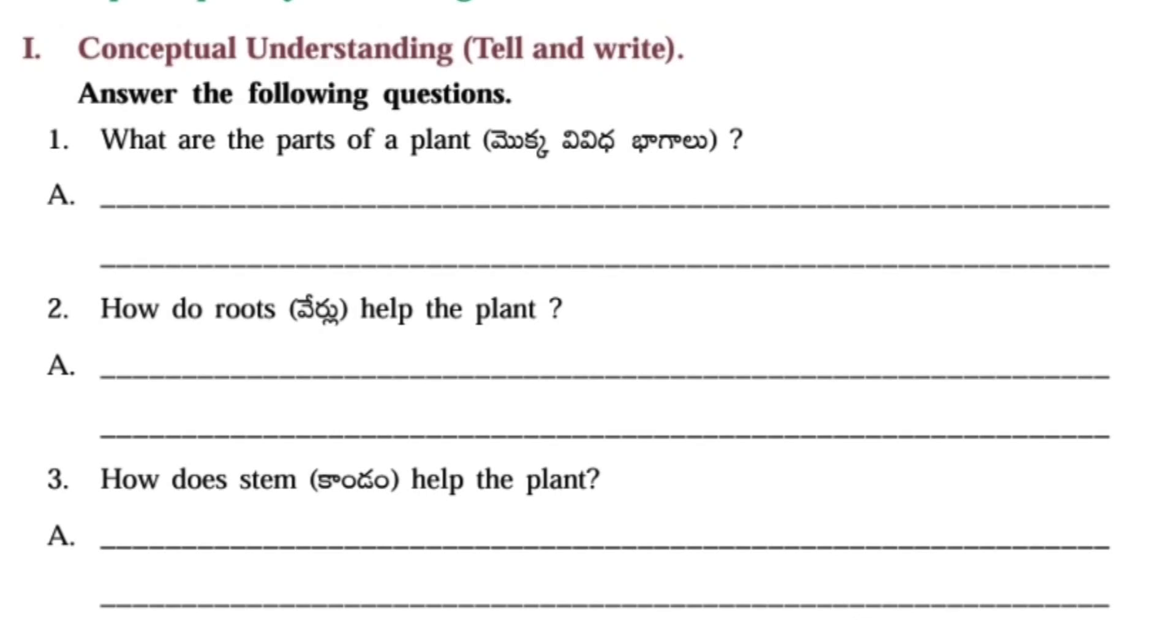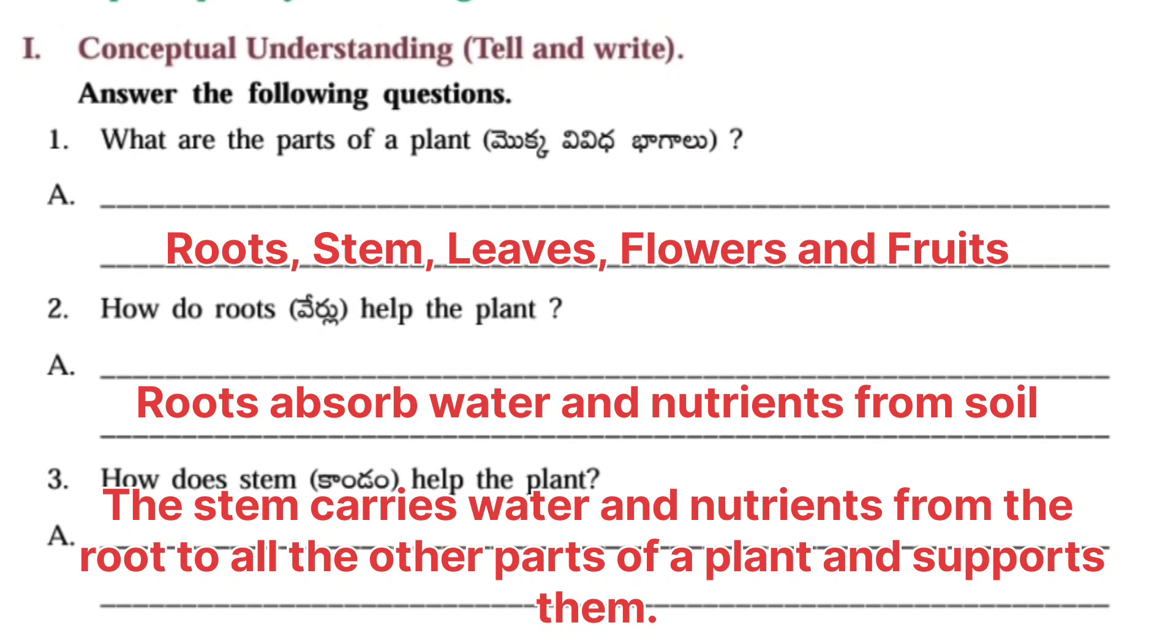Next Worksheet Number 6: Conceptual Understanding. Answer the following questions. First question: What are the parts of a plant? Roots, stem, leaves, flowers and fruits. Second question: How do roots help the plant? Answer: Roots absorb water and nutrients from soil. Third question: How does stem help the plant? Answer: The stem carries water and nutrients from the root to all the other parts of a plant and supports them.